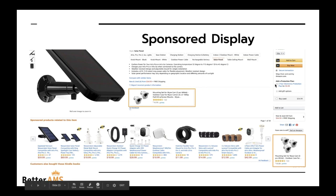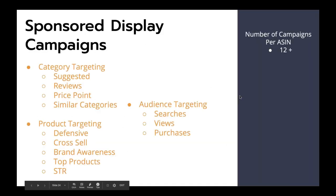Some of the campaign types for sponsored display: you have category targeting — suggested, reviews, price point — it's really no different than the other targeting types. Product targeting: exact same strategies. And we also have audience targeting with sponsored display. What's amazing about this is it's a great way to dip your toes into DSP. What's not as fantastic is it's typically more brand awareness — if anyone searches for a product similar to ours, we serve them an ad; if anyone views our product, we serve them another ad; if anyone purchases our product, we serve them another ad. A lot of opportunity for these to do incredible, but they are more top of the funnel, so we typically start with lower budgets and lower bids.